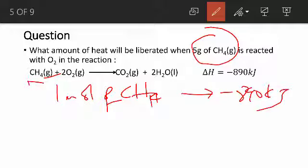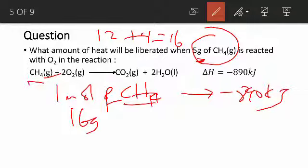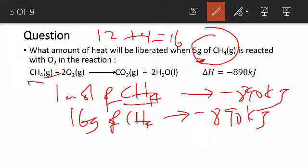Now 1 mole of methane, since what we are given is mass, 1 mole of methane, if you calculate the molar mass of methane, it is going to be 12 plus 4. Hydrogen is 1 times 4, which is 16. So we can say that 16 grams of methane is going to give us minus 890 kilojoules. That is thermochemically. So 16 grams of methane is going to liberate minus 890 kilojoules.